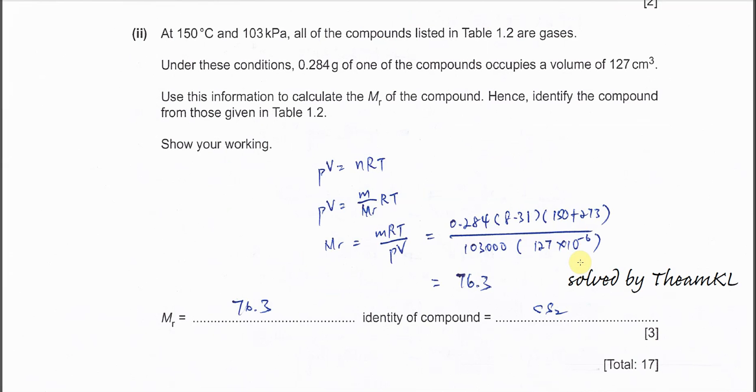Part E(ii): Temperature, pressure, and mass (0.284g) of one compound occupying a volume of 127 cm³ are given. Use this to calculate the molar mass. You need the combined gas law: PV = nRT. Make sure to use standard units - temperature in Kelvin, pressure in Pascals.